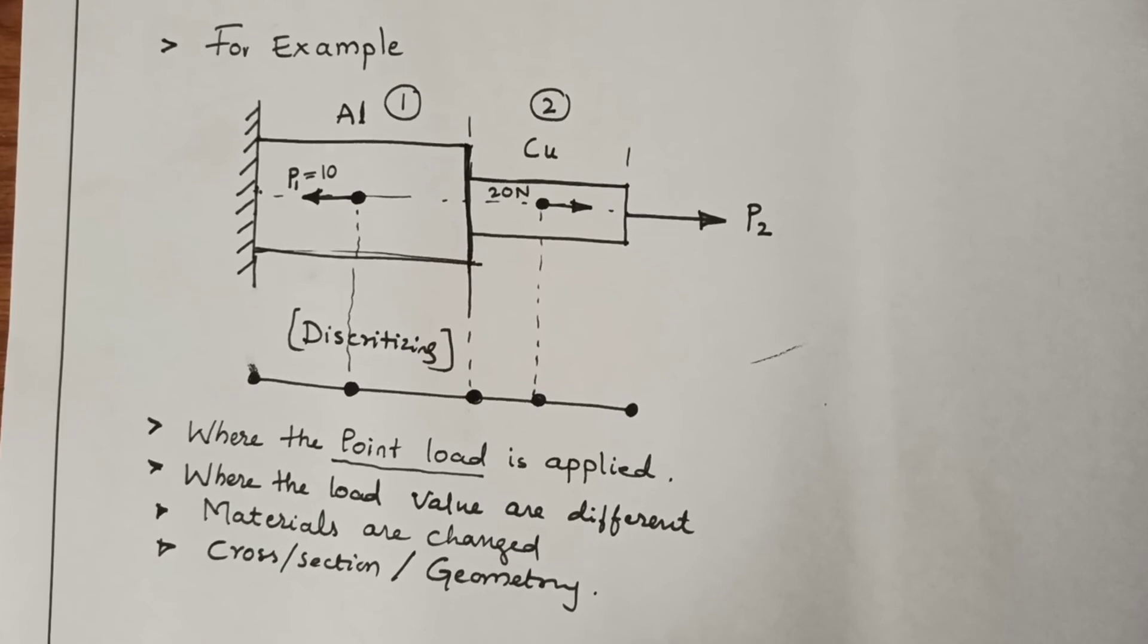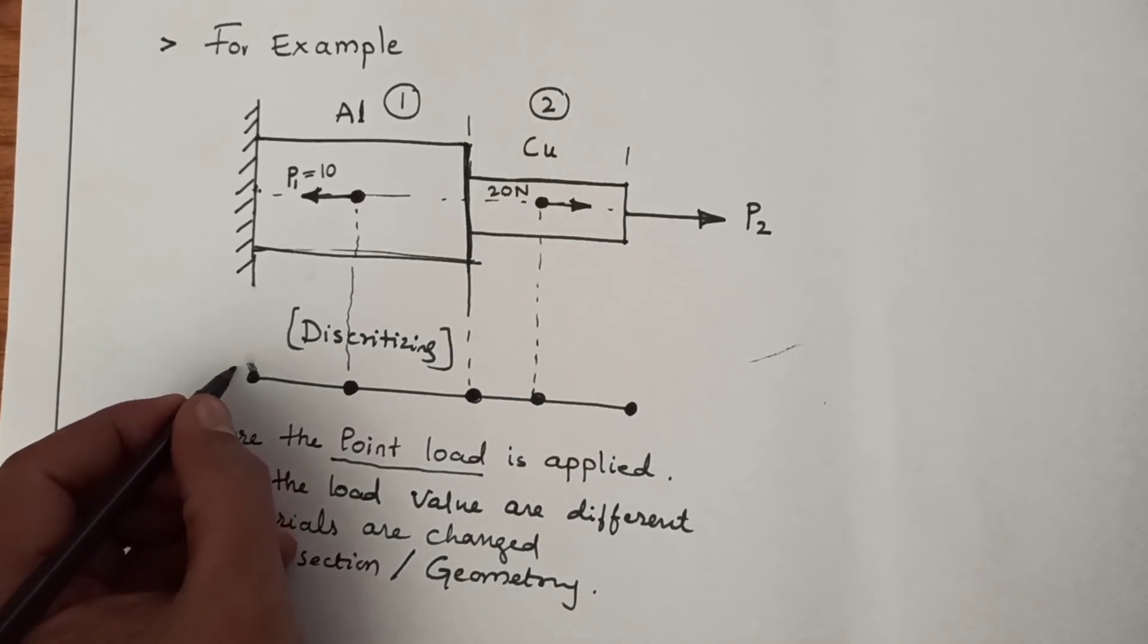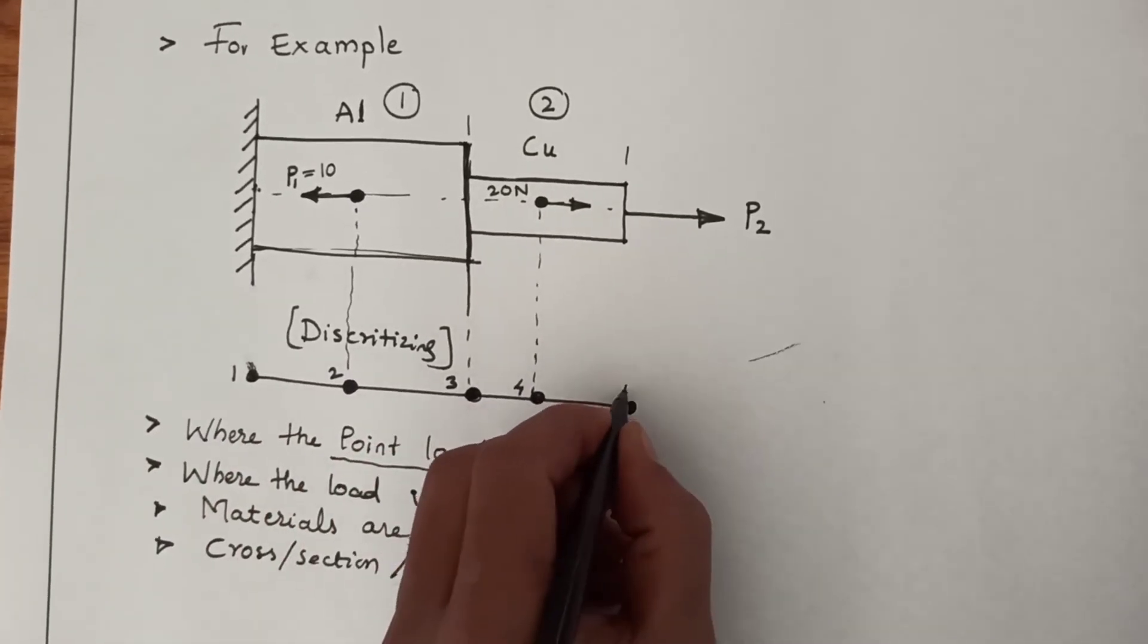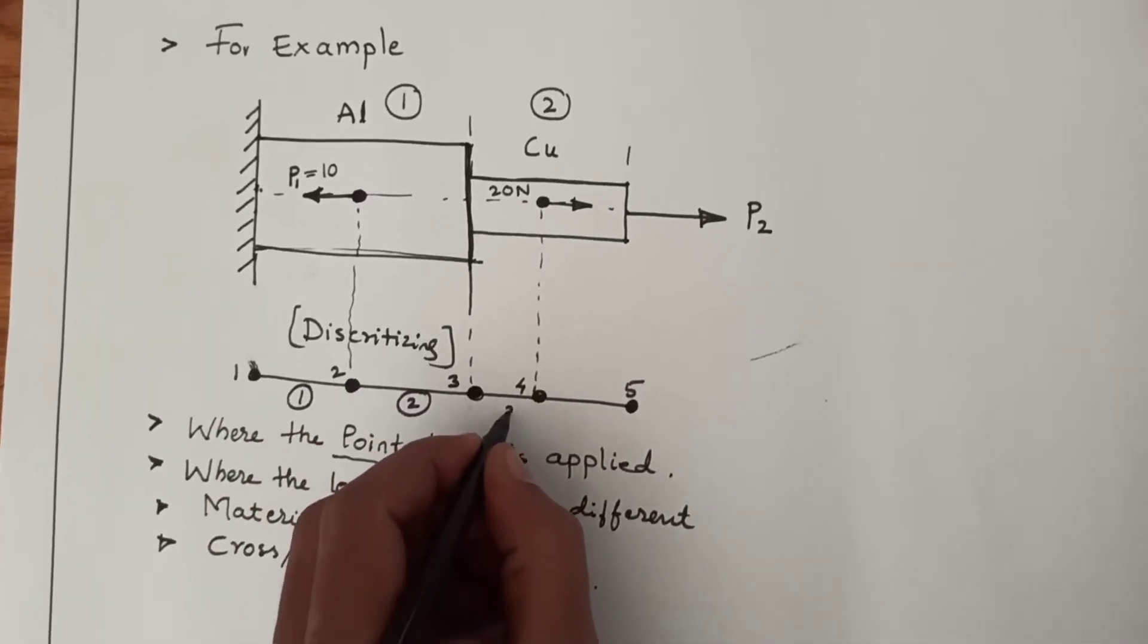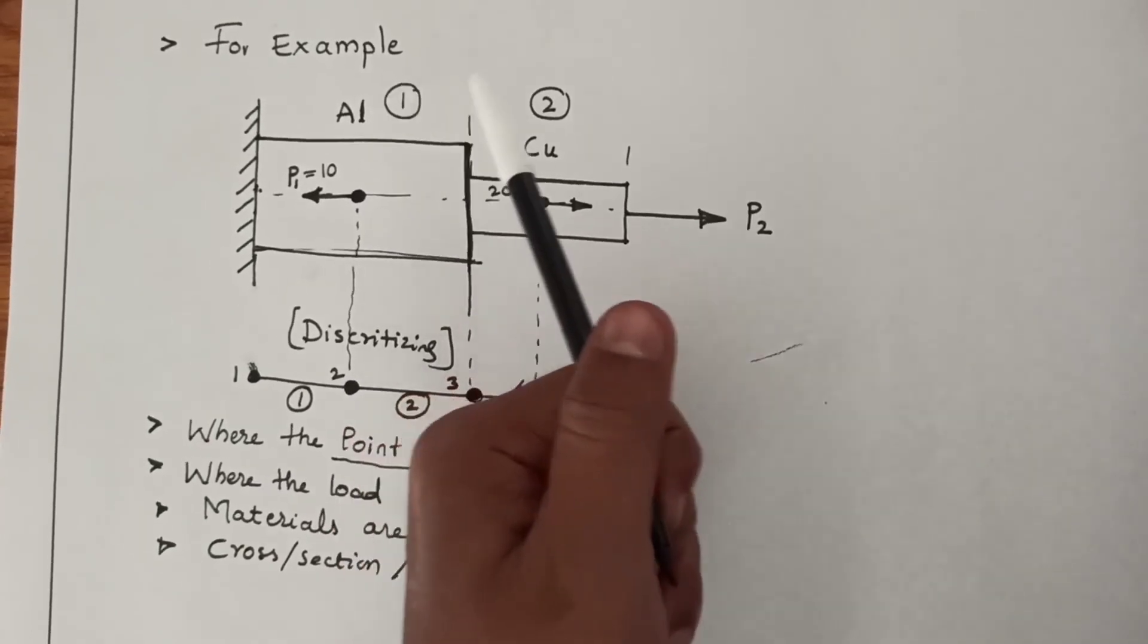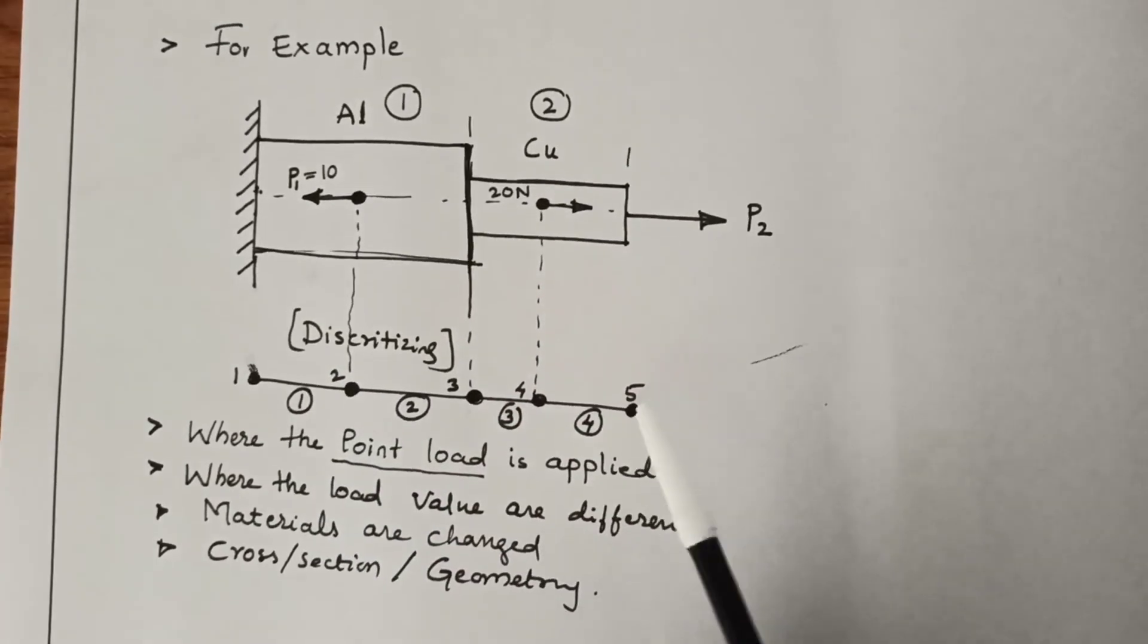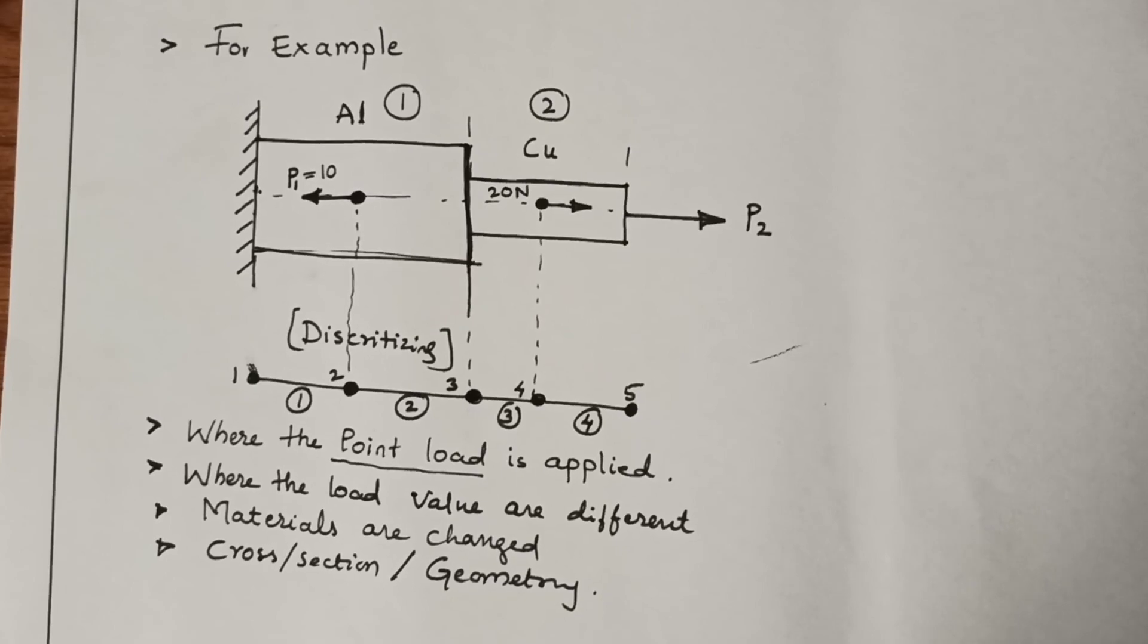Hope your doubt is clear now, how to divide the elements and how to represent the nodes. Now you can represent the nodes 1, 2, 3, 4, 5 and elements like 1, 2, 3, 4. So earlier it was 2 elements but based upon different conditions it becomes 4 elements. Thank you.